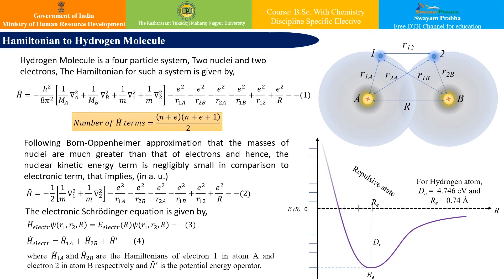We begin by setting up the Hamiltonian for hydrogen molecule, which is a four-body system. As you can see in this figure, there is hydrogen atom A and hydrogen atom B, with two electrons assigned to them. R1A is the distance between hydrogen atom A and electron 1, R2B is the distance between hydrogen atom B and electron 2, R12 is the distance between the two electrons, and capital R is the internuclear distance — the bond length.